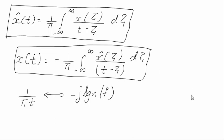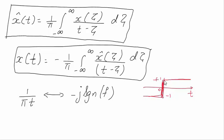The signum function is defined as: for t > 0, sgn(t) = +1; for t < 0, sgn(t) = −1; at t = 0, the function is not defined, or if we take an average, it is 0. Similarly, if writing sgn(f), the time axis becomes the frequency axis: for frequency > 0, it is +1; for frequency < 0, it is −1. This is how the signum function is defined.